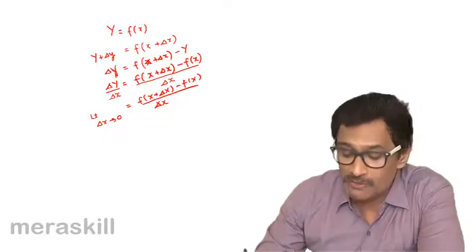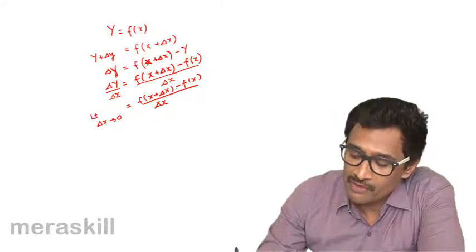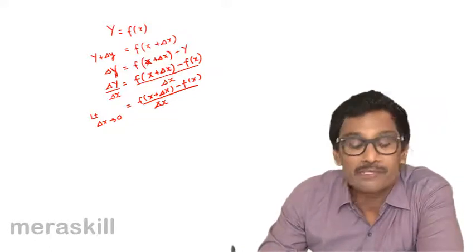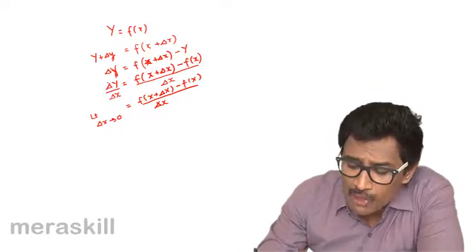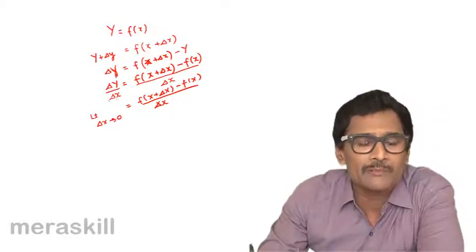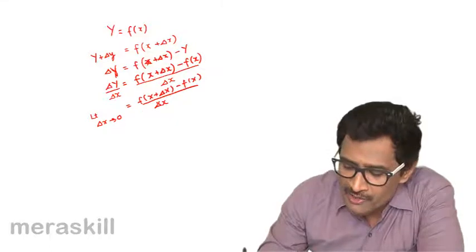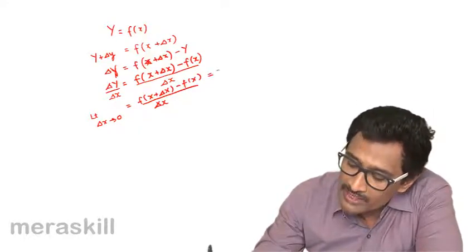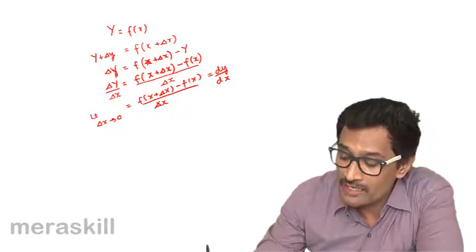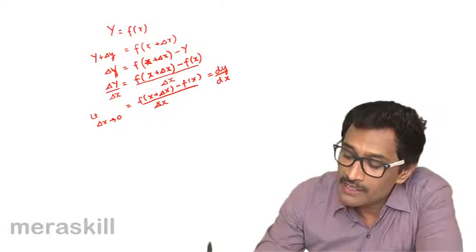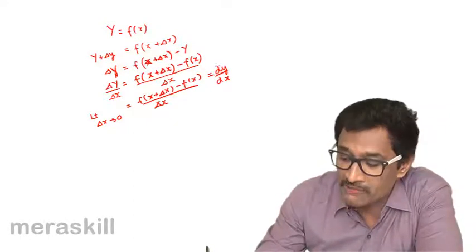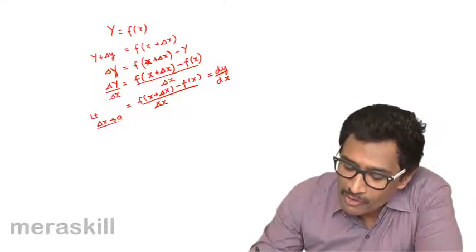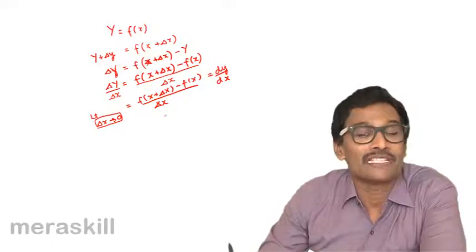You've found the change in the value of the function when x changed by delta x, divided by that change in delta x, keeping delta x the smallest possible — that is, approaching zero. This is finding the smallest change in y with respect to the smallest possible change in x. This whole thing is called dy by dx — the change in y upon the corresponding change in x when that change is smallest possible. This is the concept of the derivative.